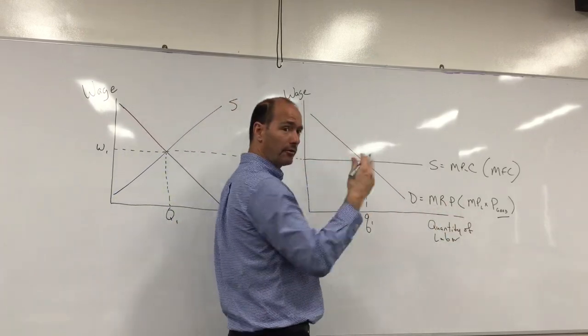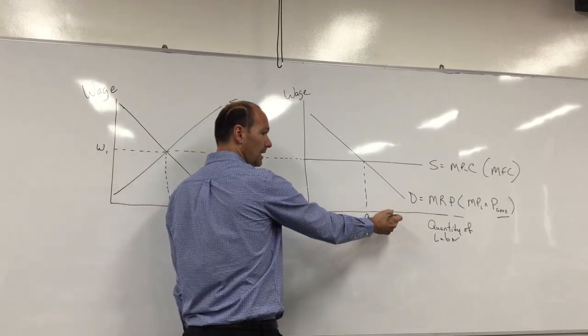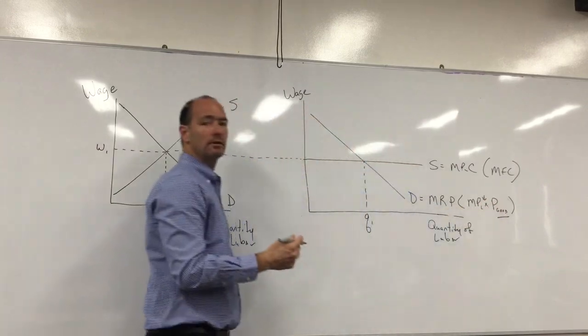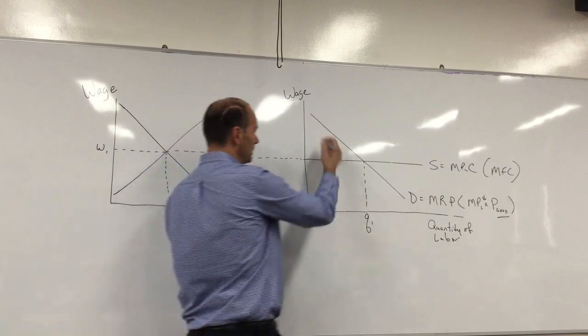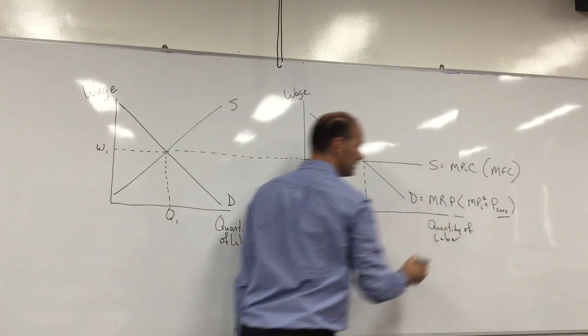For any firm, no matter what kind of market they're working in, increasing amounts of labor result in a decreasing marginal product. As you increase labor, marginal product decreases, thus this curve decreases. Since price remains constant and marginal product is decreasing as you move to the right along the horizontal axis...